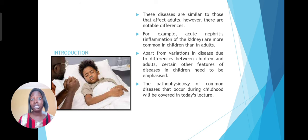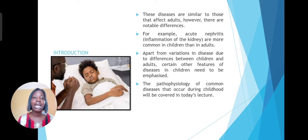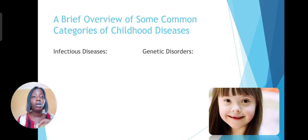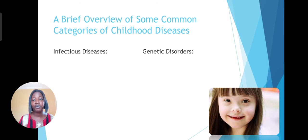Those diseases are similar to those that affect adults. However, there are notable differences — for example, acute nephritis, which is the inflammation of the kidneys, is more common in children than adults. Apart from variations in diseases due to differences between children and adults, certain other features of diseases in children need to be emphasized. We'll be looking at the pathophysiology of some of the common categories of childhood diseases, starting with a brief overview.